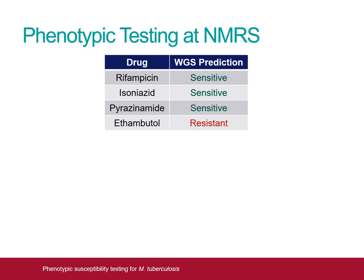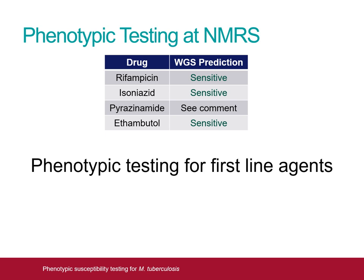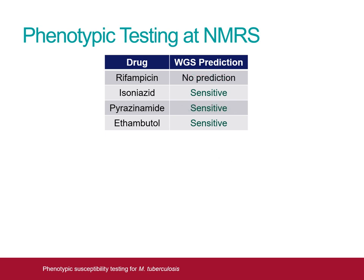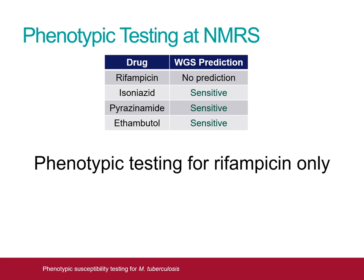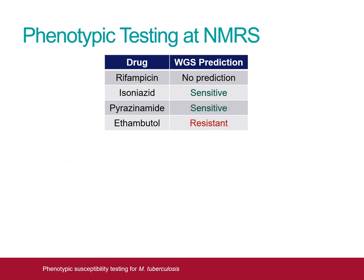In cases where isoniazid and rifampicin are predicted to be susceptible, but either or both of the other two first line drugs are either predicted to be resistant or have a poor quality sequence, phenotypic testing will be performed for all four first line agents. If an isolate has an uncharacterised mutation in the rpoB gene, which determines rifampicin resistance, the NMRS will perform phenotypic testing for rifampicin alone to ensure that the isolate is sensitive. This is also the case if either or both of pyrazinamide and ethambutol also have uncharacterised mutations. However, if either or both of those two agents are predicted as resistant or have a poor quality sequence, phenotypic testing will be performed for all four first line agents.